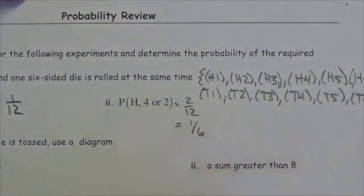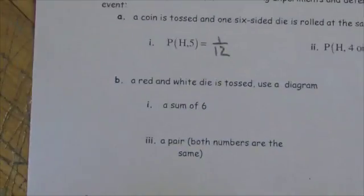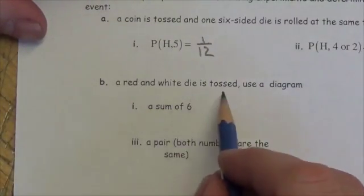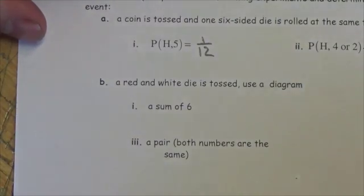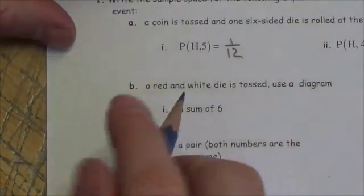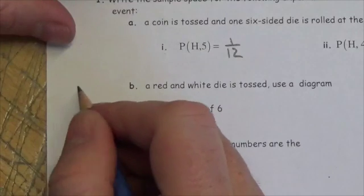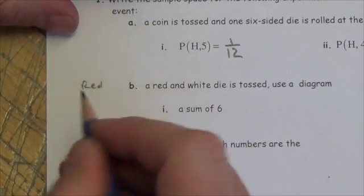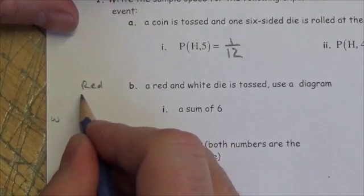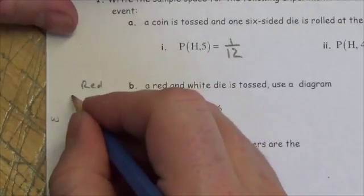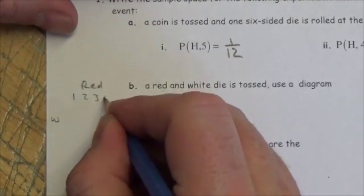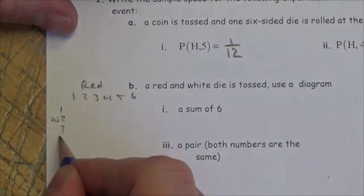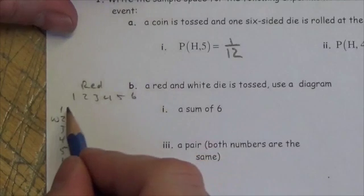Now let's look at: a red and a white die is tossed — use a diagram. I'm going to use a lattice diagram. The way a lattice diagram works is we'll have the red die on one axis and the white die on the other, with values one through six on each side.